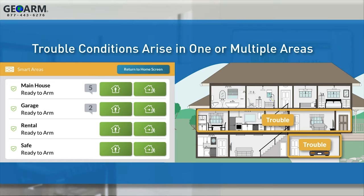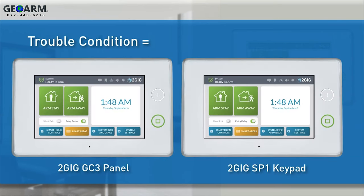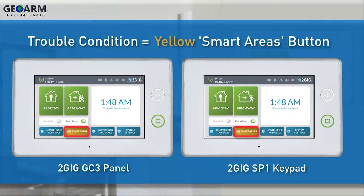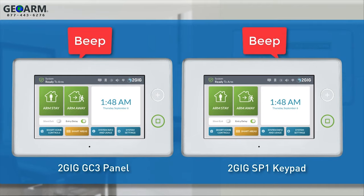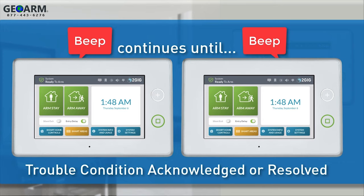Trouble conditions may arise in one or multiple smart areas monitored by a 2GIG GC3 security system. When a trouble condition exists, the smart areas button will turn yellow and the panel or SP1 keypad will periodically beep to let the user know there's a trouble condition. Periodic beeping will continue until the user acknowledges or resolves the trouble conditions.